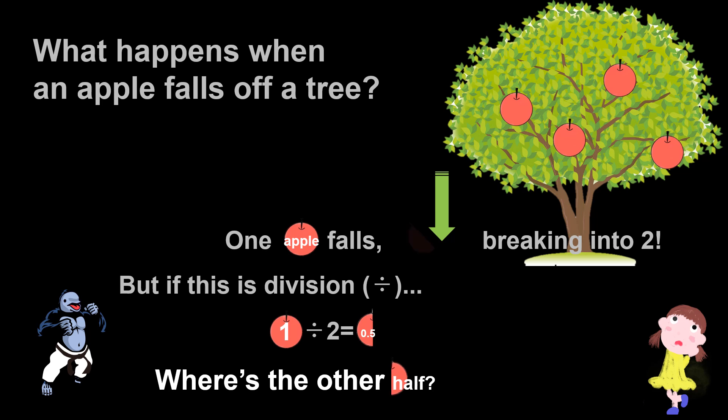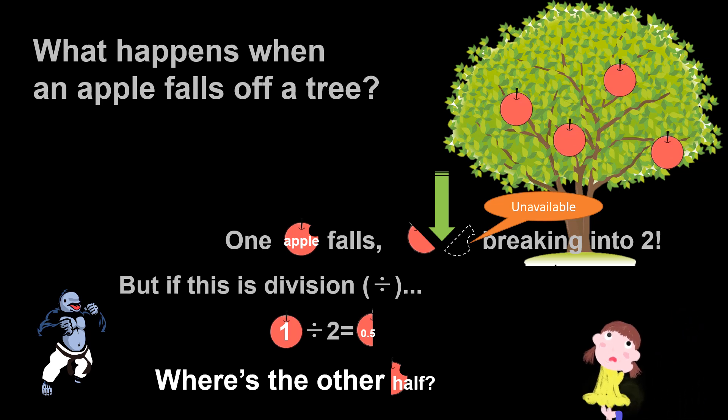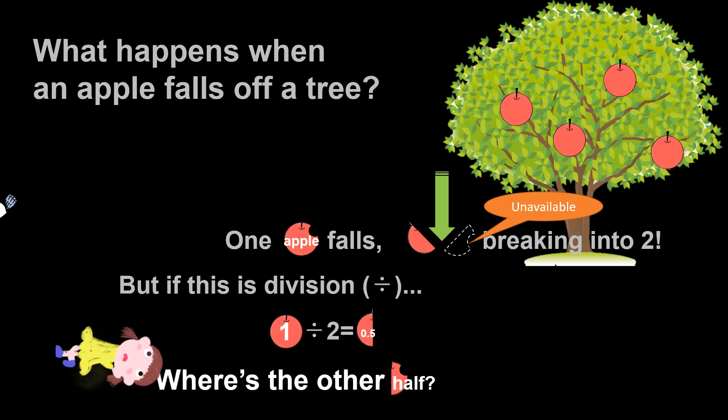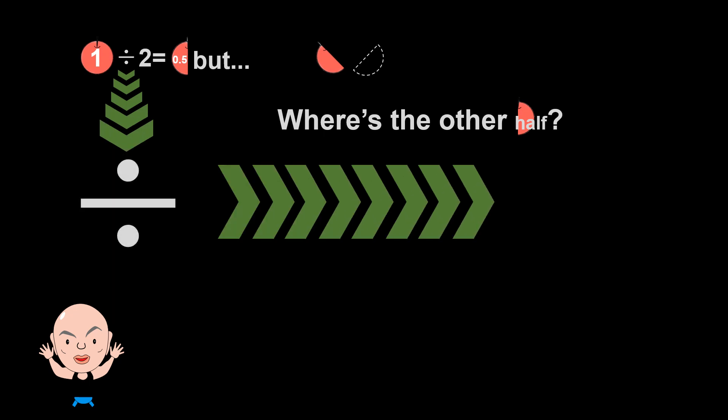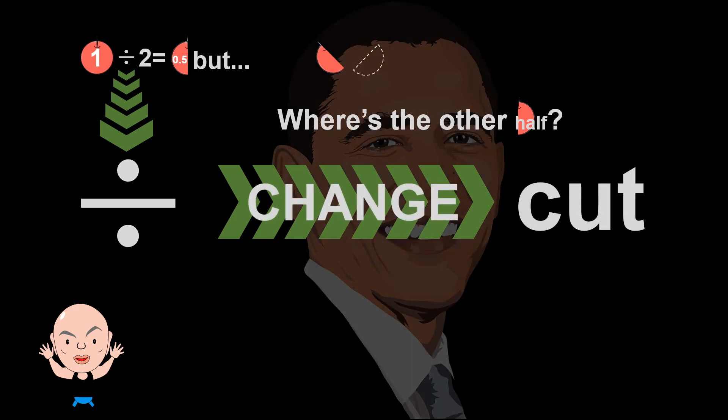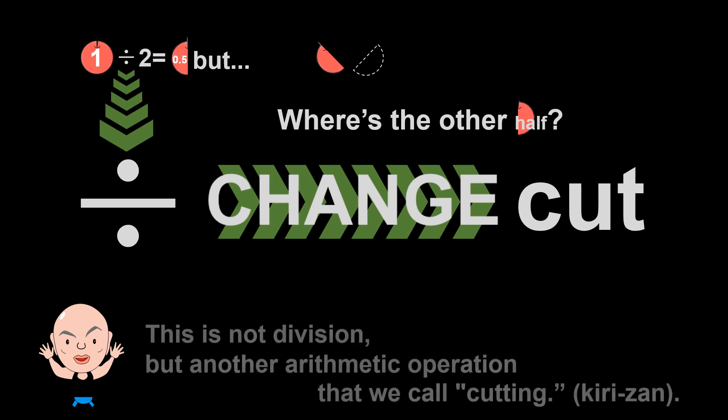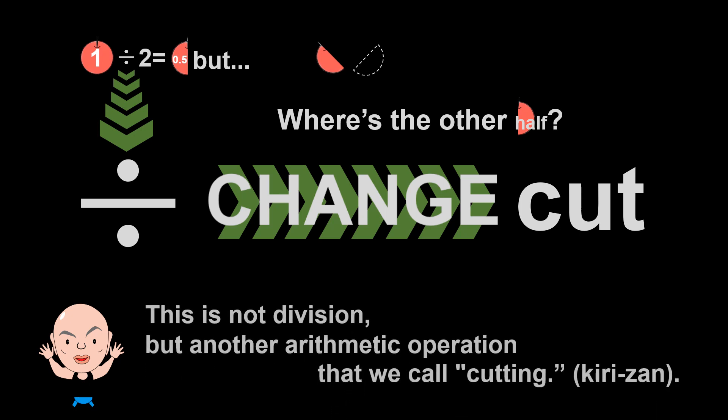Where is another piece? Oh! You can take a bite of the apple. 1 divided by 2 is 0.5, but where is another piece? So we change division to cut. This is not division, but another arithmetic operation that we call cutting.